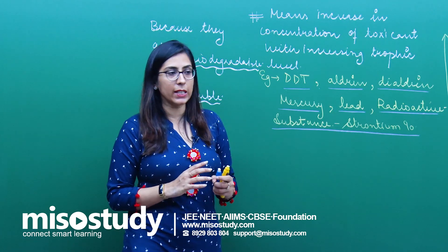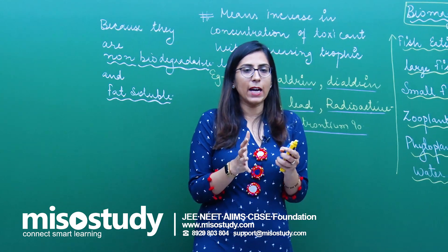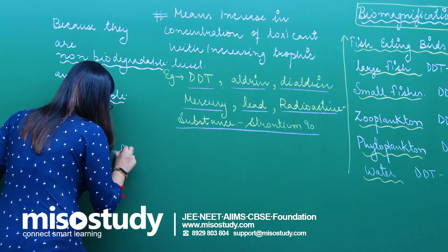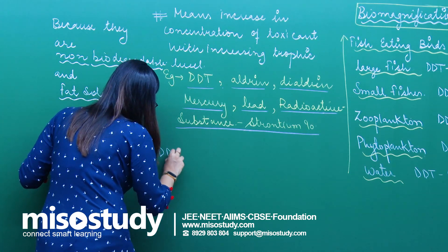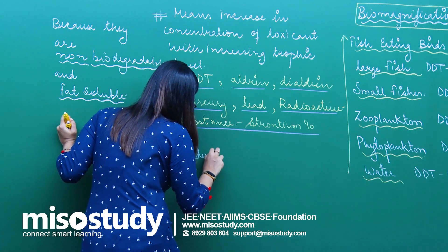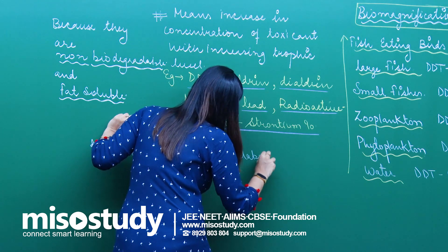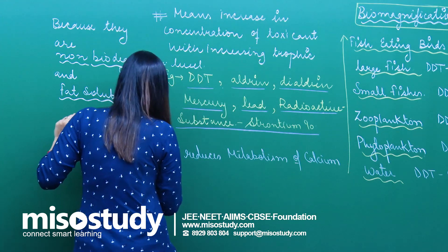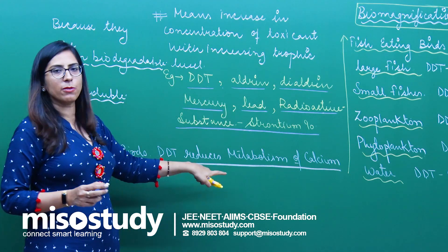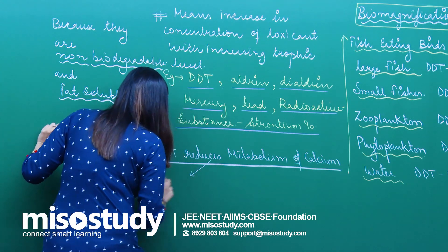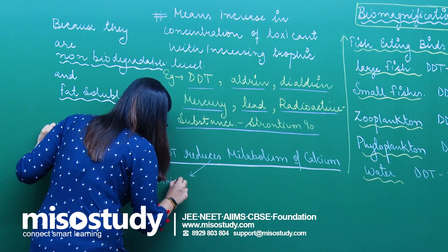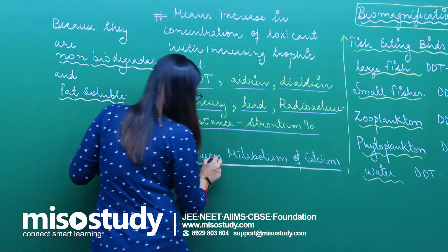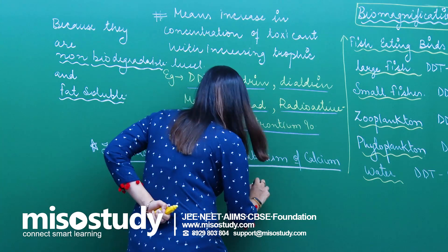Regarding the consequences, DDT has been seen to reduce the metabolism of calcium. So in birds, DDT reduces the metabolism of calcium. When there is less metabolism of calcium, it leads to the thinning of eggshells.